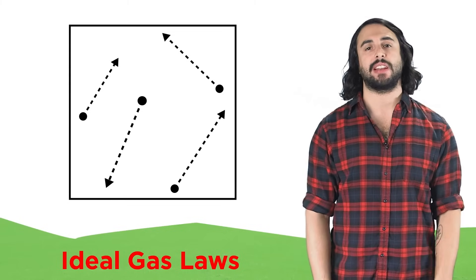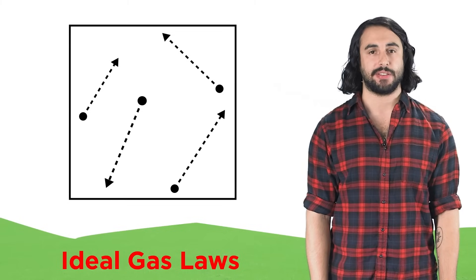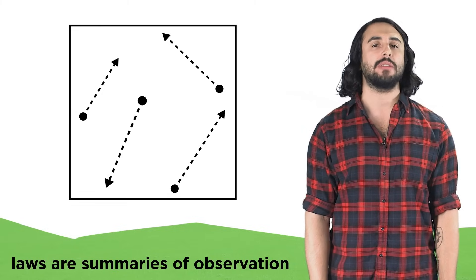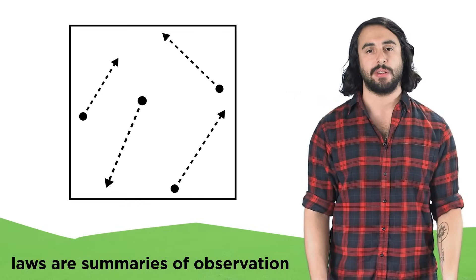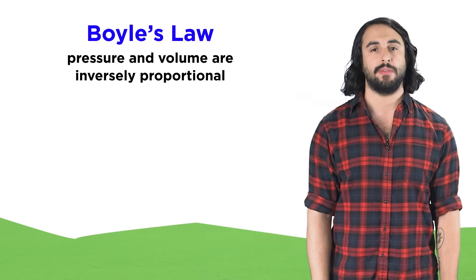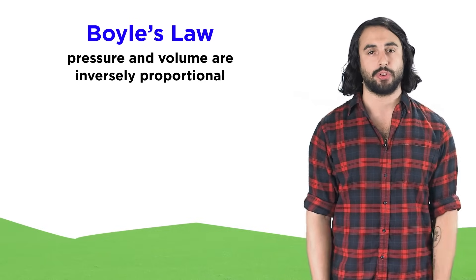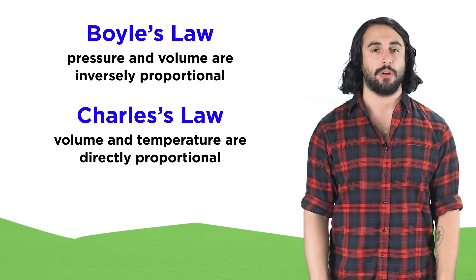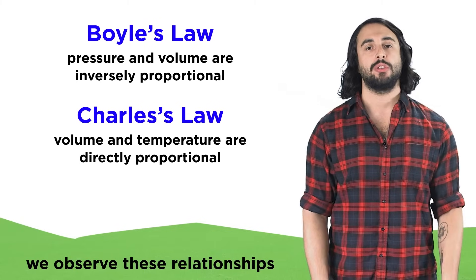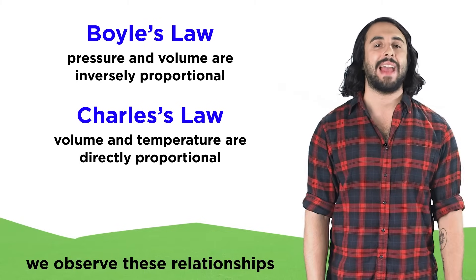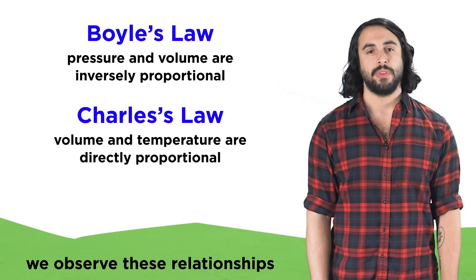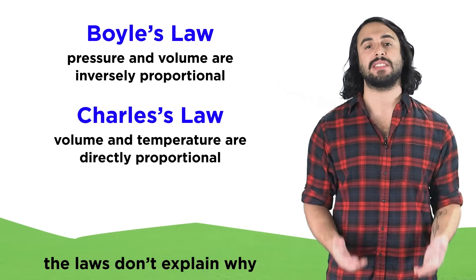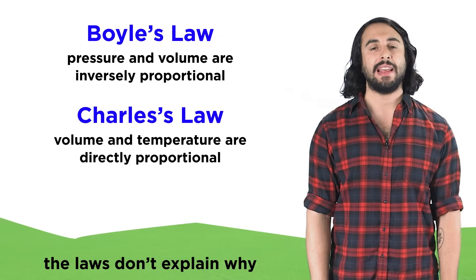We have learned about different laws that can be applied to ideal gases. Like any laws, these ideal gas laws are merely summaries of observations, such as the way pressure and volume are inversely proportional, or the way volume and temperature are directly proportional. We observe these relationships to always be true, but just like any other law, it does not explain why. For that we are going to need something more powerful. We need a theory.